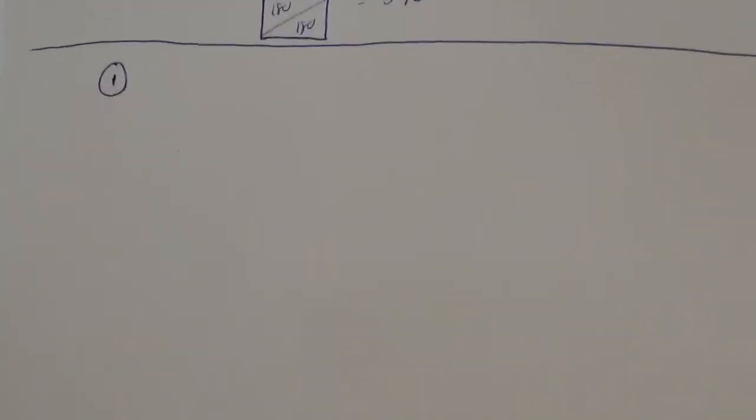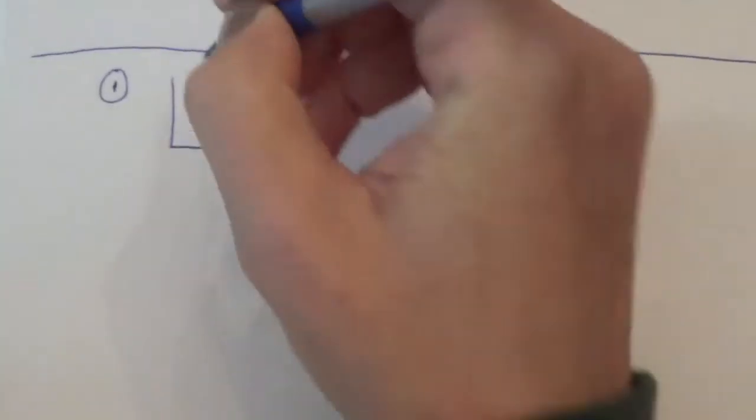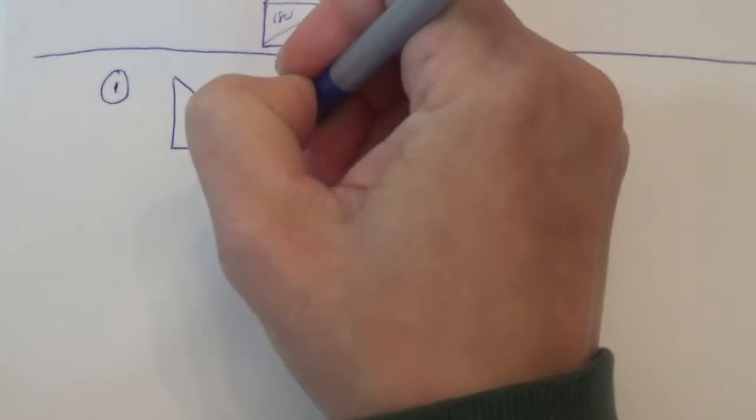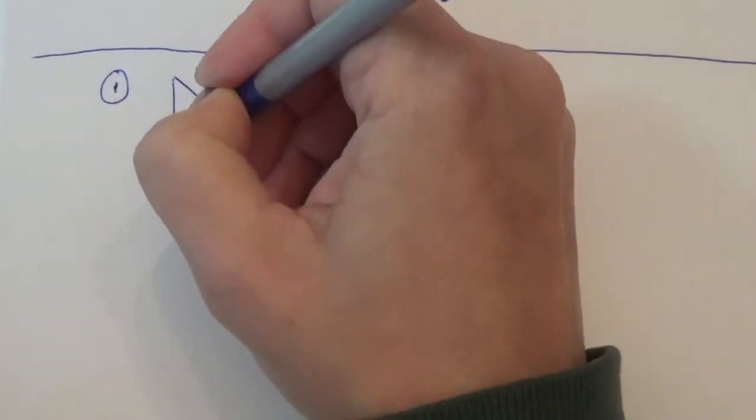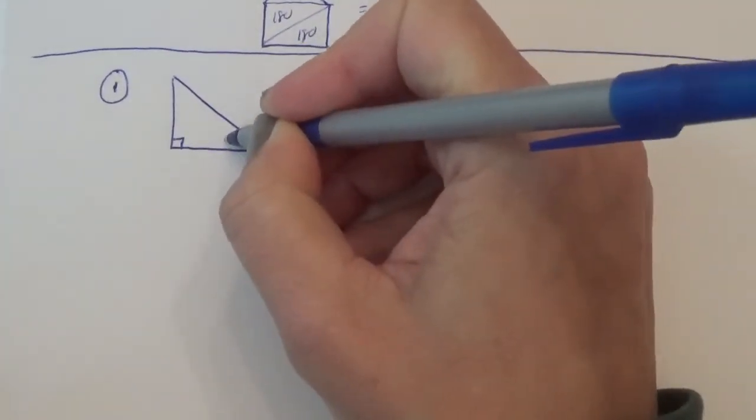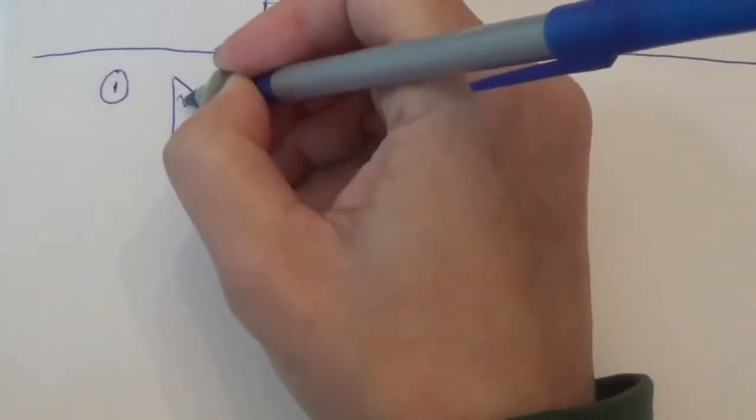Okay. So let's draw a picture here. Let's do a right triangle. We're going to start easy. Sorry, you guys have been doing so good. But let's say that's 90. This is 40. And this is x.